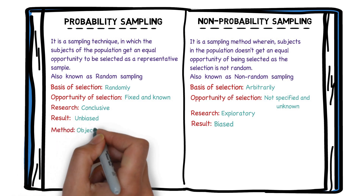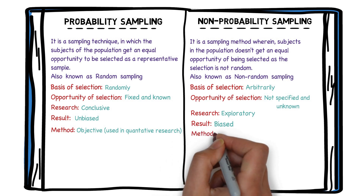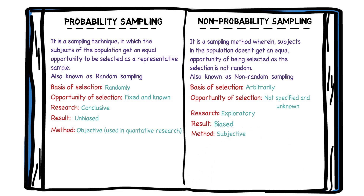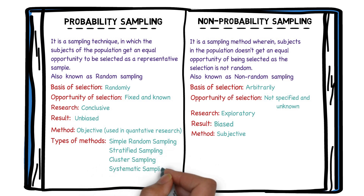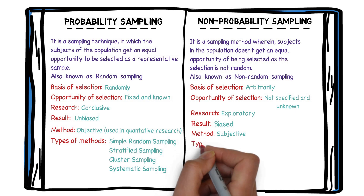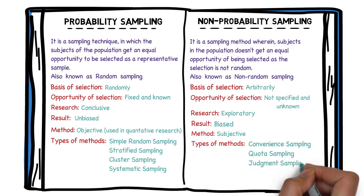Probability sampling is mainly used in quantitative research — that is, the process of collecting and analyzing numerical data, which can be used to find patterns, make predictions, and generalize results to a wider population. Whereas non-probability sampling relies on the subjective judgment of the researcher and is most useful for exploratory studies like pilot surveys — a pilot survey being the deployment of a survey to a smaller sample compared to a predefined larger sample. Types of probability sampling include simple random sampling, stratified sampling, cluster sampling, and systematic sampling. Types of non-probability sampling include convenience sampling, quota sampling, judgment sampling, and snowball sampling.